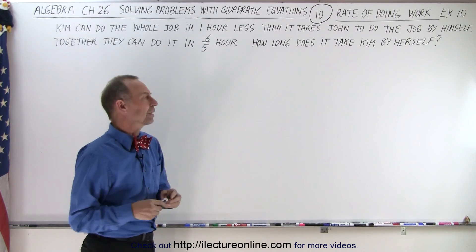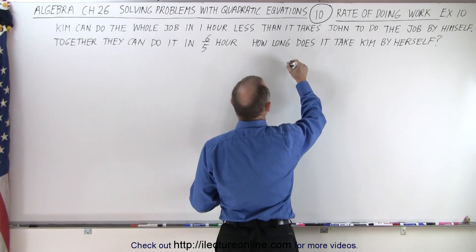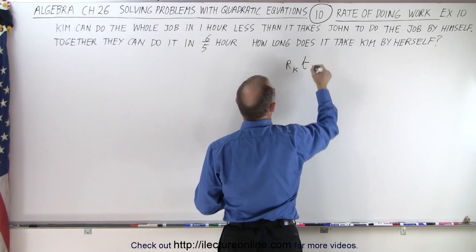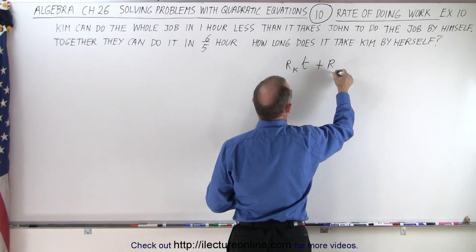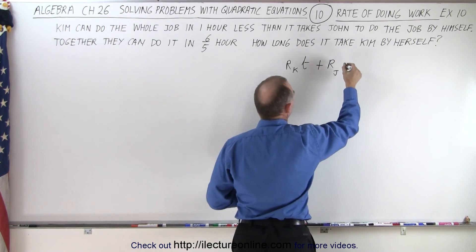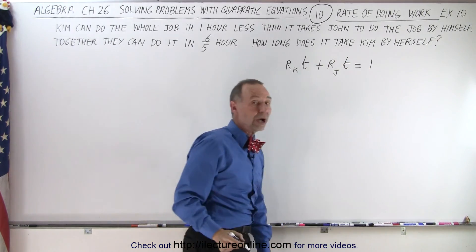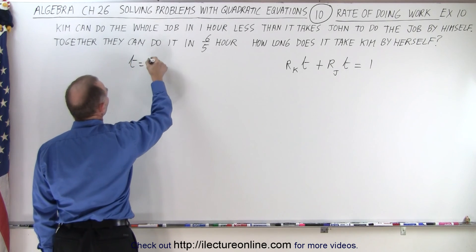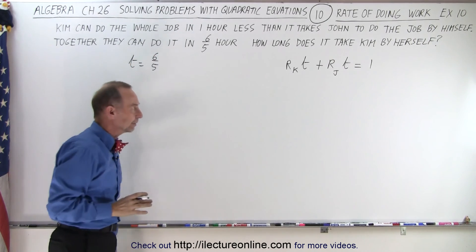The way we work this is as follows. We can say that the rate of Kim times the time they work together, plus the rate of John times the time they work together, equals the whole job done. We know that the time is equal to six-fifths of an hour when they work together.